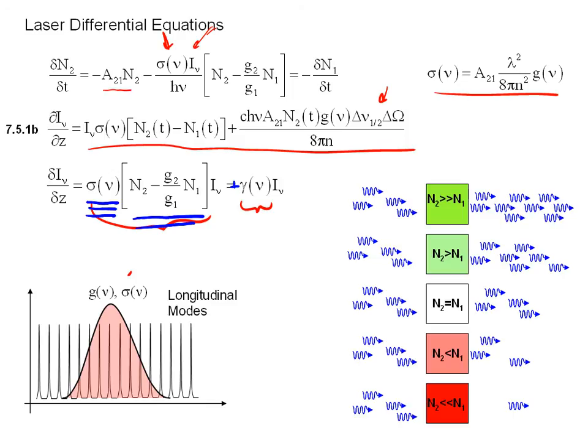As N2 becomes less than N1, you start to get absorption. You have fewer photons coming out. Now, as N2 gets much, much less than N1, which is the case we usually have, we have very strong absorption. And photons coming in, only a few, if any, photons are going to escape.